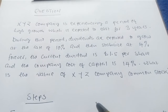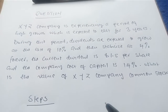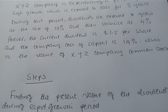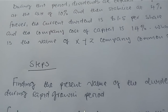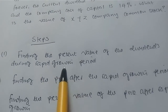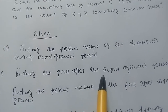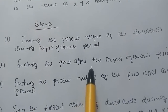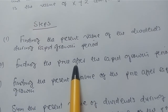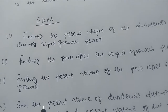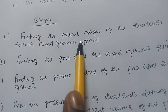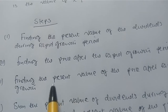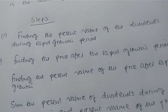In order to find the value of a stock experiencing changes in dividend growth, we undergo four steps. First, find the present value of dividends during the rapid growth rate. Second, find the price after the rapid growth period. Third, find the present value of that price. Finally, sum the present value of dividends from step one and the present value of the price after rapid growth — this gives us the value of the common stock.